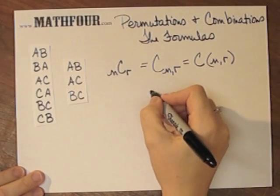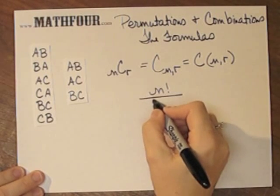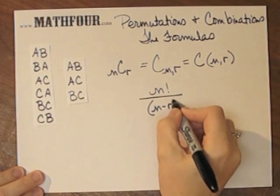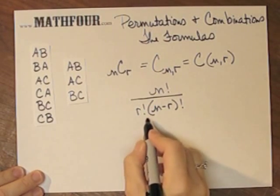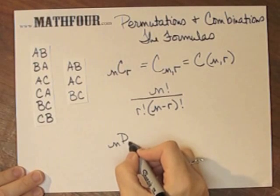And the formula is n factorial over n minus r factorial, and then you have an r factorial here, and this is slightly different from permutation.